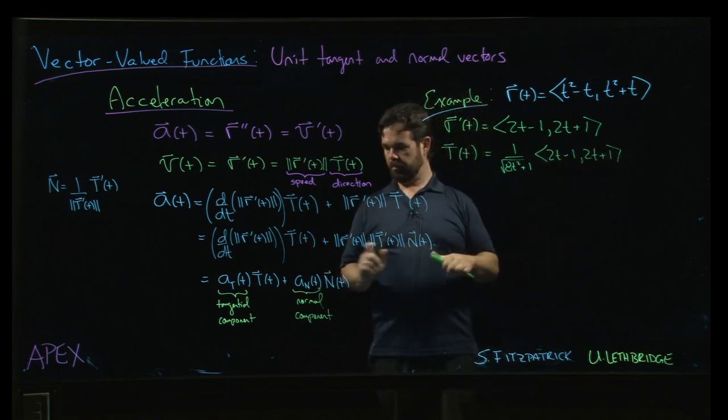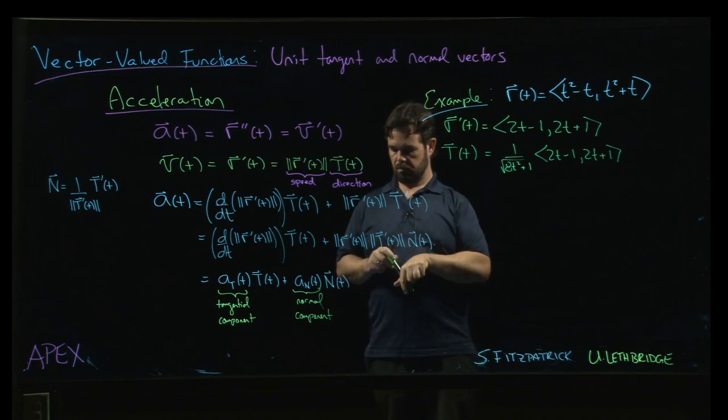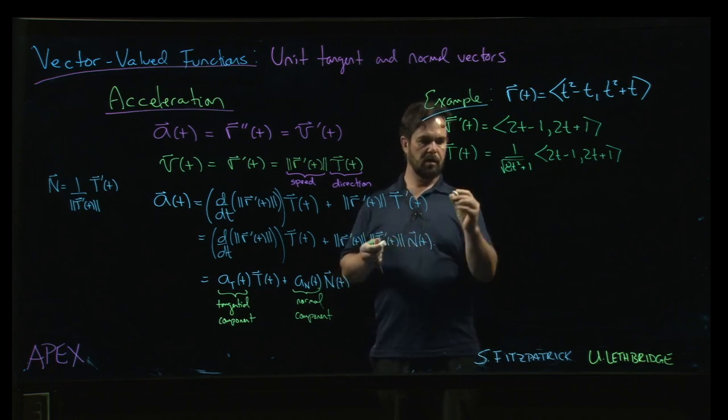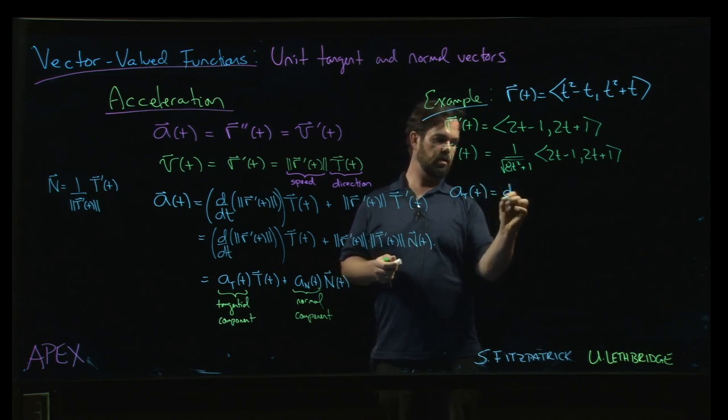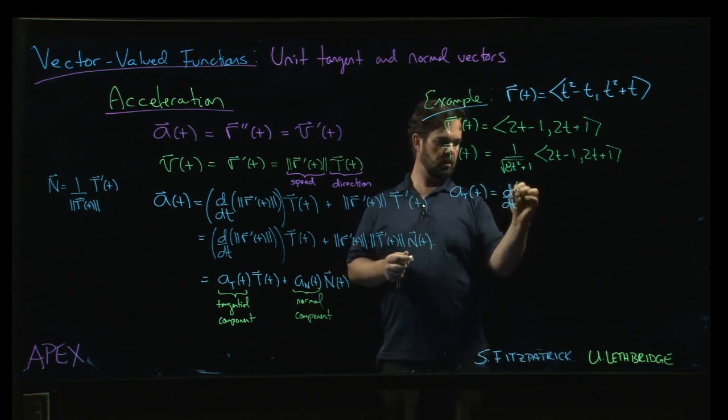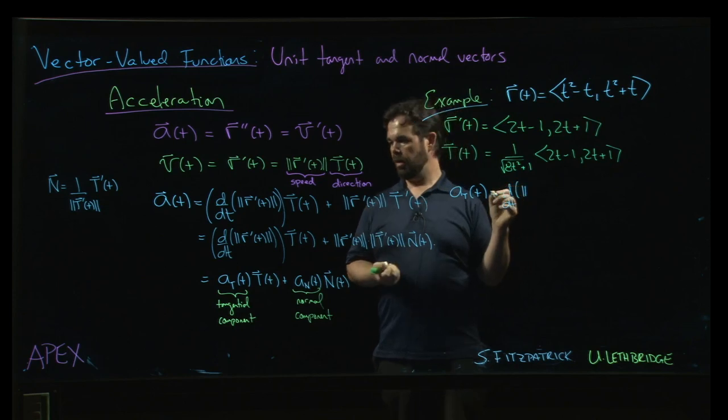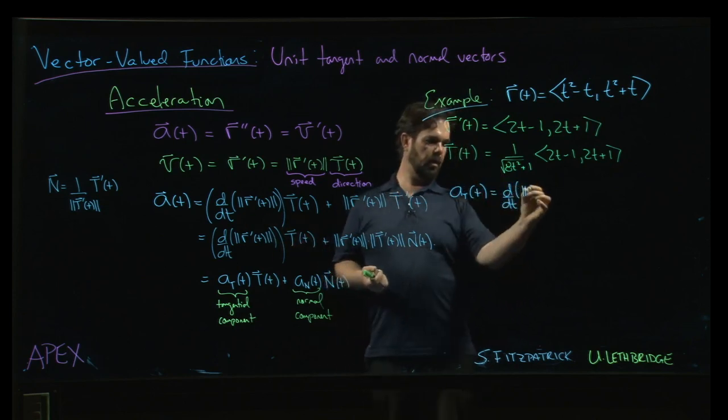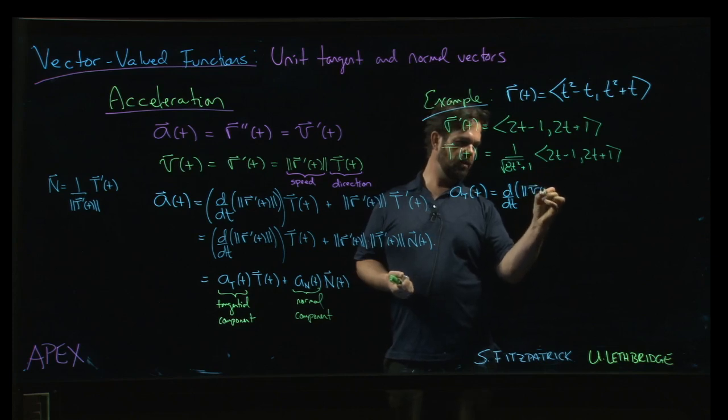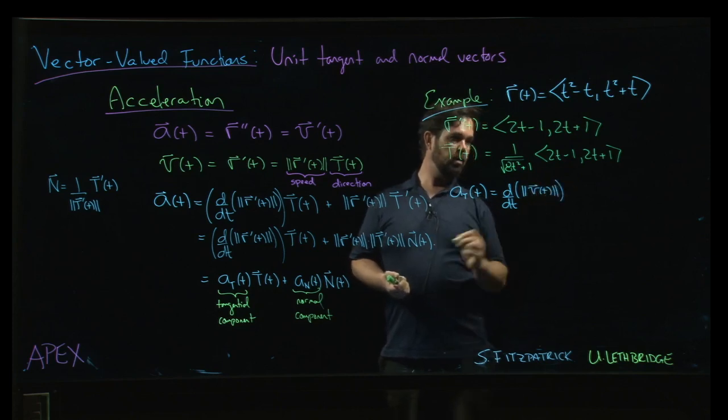The tangential component is just the derivative of the magnitude of r prime. If you want, by the way, r prime is of course just the velocity, so we can do that.